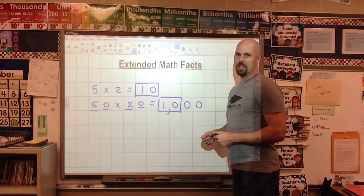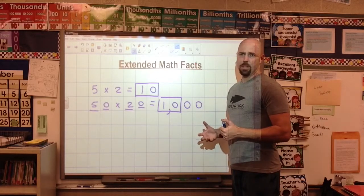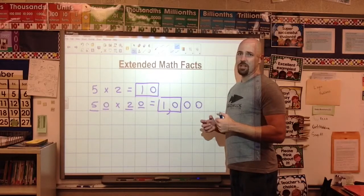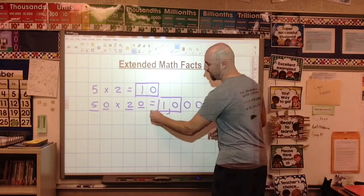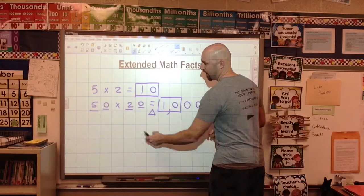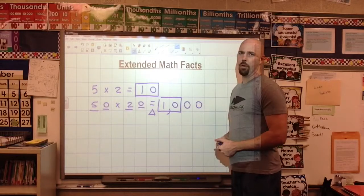So that is the beginning of extended math facts. You can take any of the math facts off the multiplication table and just start adding zeros and see if your kids can do that teeter-totter and make it balanced. If I have 2 zeros here, I add 2 here. And that's how it works.